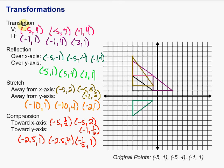So to recap the four types of transformations: A translation — for vertical movement, change the y-coordinate by adding or subtracting; for horizontal movement, change the x-coordinate. A reflection over the x-axis changes the sign of the y-coordinate; over the y-axis, changes the sign of the x-coordinate — always the opposite. For stretches and compressions, it's also the opposite: away from the x-axis multiply the y-coordinate, away from the y-axis multiply the x-coordinate. A stretch multiplies by a number greater than 1; a compression multiplies by a number between 0 and 1. Hope that was helpful — good luck!